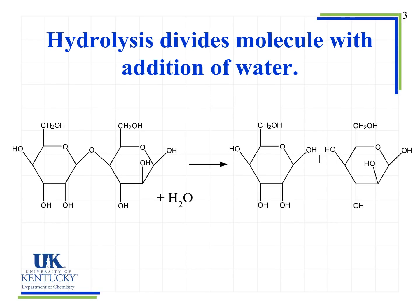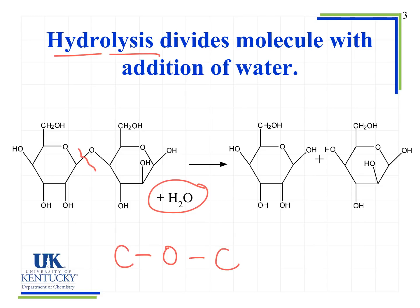Now we look at the reverse process — hydrolysis — where water is a reactant because we're adding water and something is breaking apart. We break these molecules apart by doing the reverse of condensation. Specifically, we break the bond between the carbon atom in the ring and the oxygen atom — the same bond that formed during condensation. It doesn't matter whether we break the bond on one side or the other; we're breaking the C-O-C bridge.